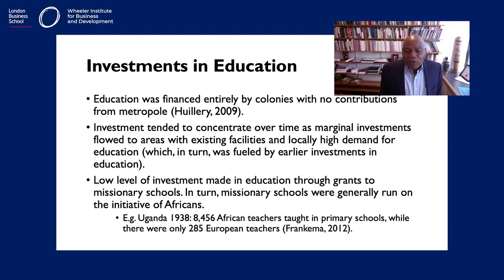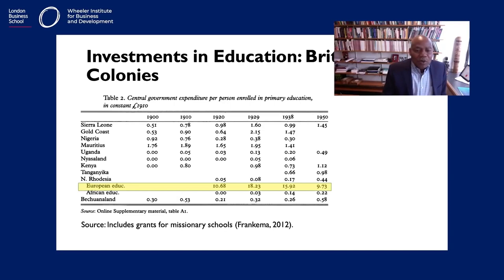The low level of investment was made through grants to missionary schools, which were originally run on the initiative of Africans themselves. Looking at this table, you can see that government expenditure per person on primary education was very low — for example, 0.5 in Sierra Leone and 0.9 in Ghana.